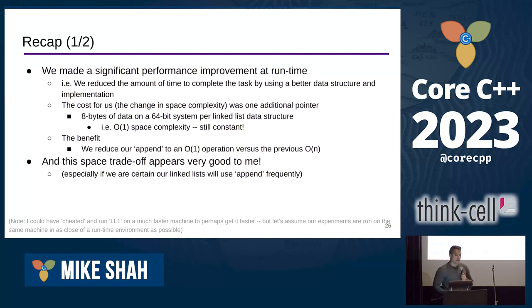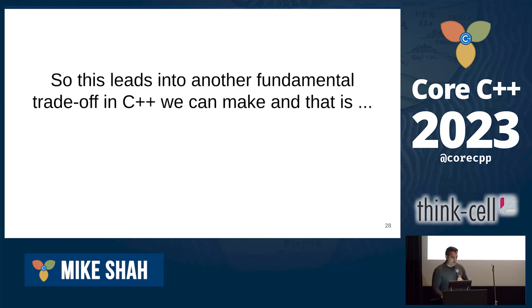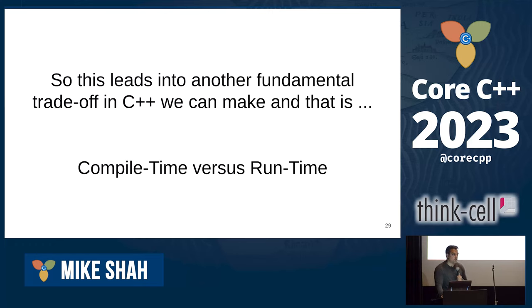This leads me to another fundamental trade-off, specific to C++ and other compiled languages: compile time versus runtime. We can spend a little compile time to get an advantage at runtime, or take a shortcut at runtime to increase compile time. It depends on what trade-off you need to make.